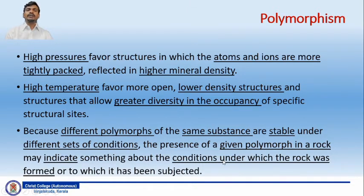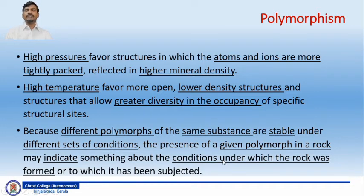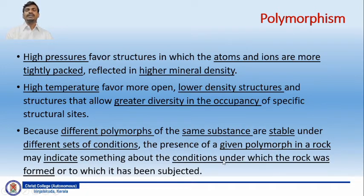High pressure leads to higher mineral density. High temperature favors more open and lower density structures, and structures that allow greater diversity in occupancy of specific structural sites. Because different polymorphs of the same substance are stable under different sets of conditions, the presence of a given polymorph in a rock may indicate something about the conditions under which the rock was formed or which it has been subjected to during the formation process.